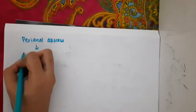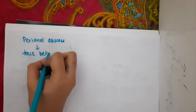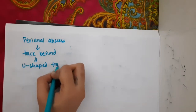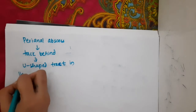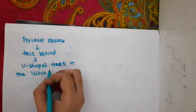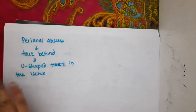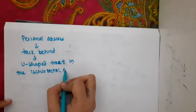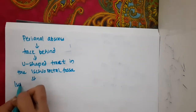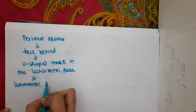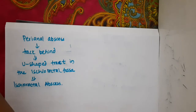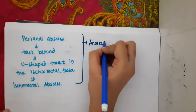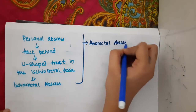This perianal abscess will track behind and form a U-shaped tract in the ischiorectal fossa, following the path of least resistance, thus resulting in ischiorectal abscess. This theory explaining anorectal abscess formation is called the cryptoglandular theory.